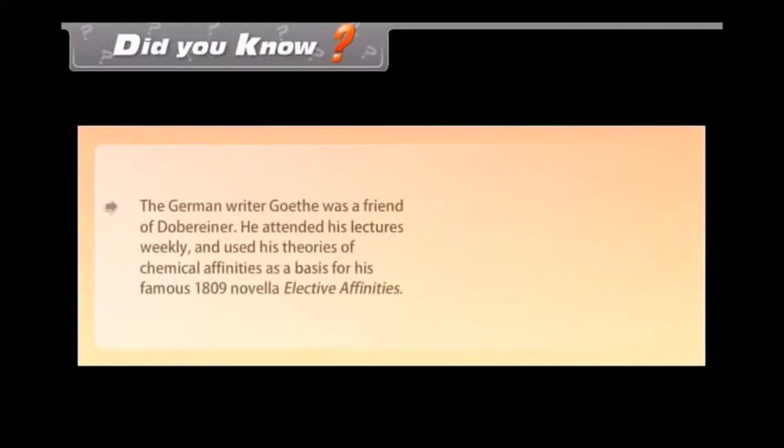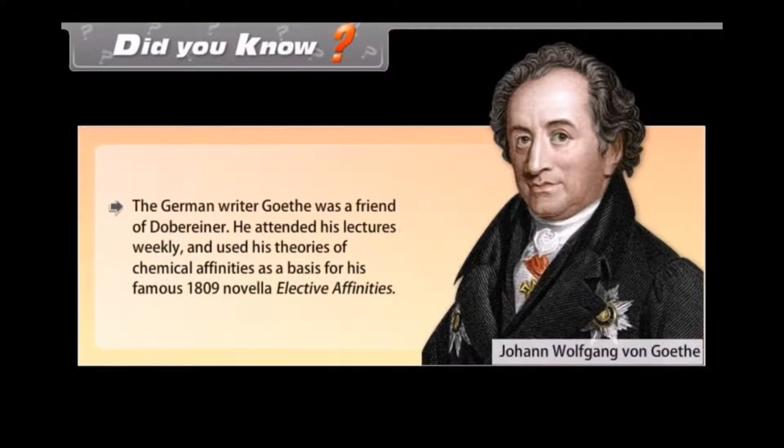Did you know? The German writer Goethe was a friend of Dobereiner. He attended his lectures weekly and used his theories of chemical affinities as a basis for his famous 1809 novella, Elective Affinities.